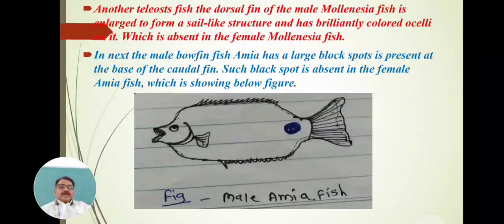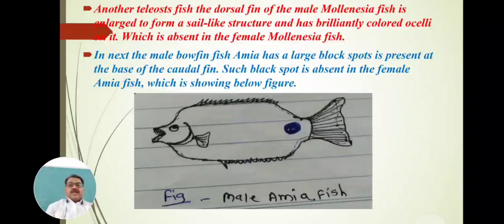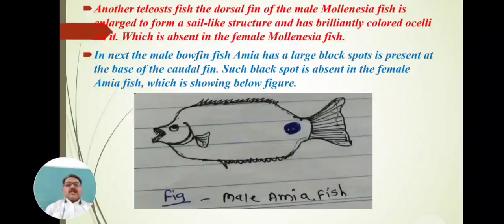Another teleost fish: the dorsal fin of the male Mollienesia fish is enlarged to form a sail-like structure with brilliantly colored ocelli. This sail-like structure with colored ocelli is absent in female Mollienesia. This structure identifies whether the fish is male or female Mollienesia, and is the sexual dimorphic character of this species.